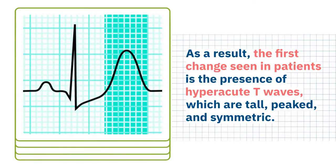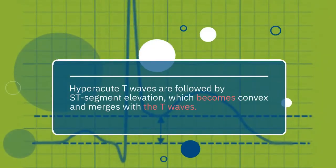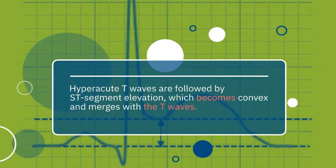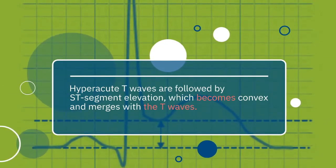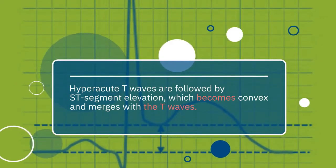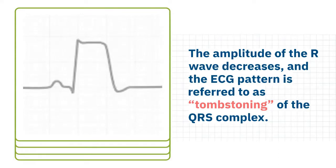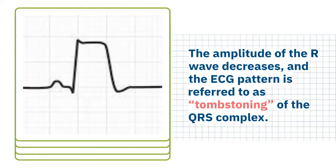As a result, the first change seen in patients is the presence of hyperacute T waves, which are tall, peaked, and symmetric. These hyperacute waves are followed by ST segment elevation, which becomes convex and merges with the T waves. The amplitude of the R wave decreases, and the ECG pattern is referred to as tombstoning of the QRS complex.